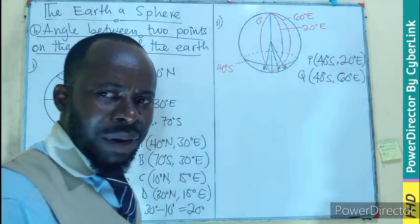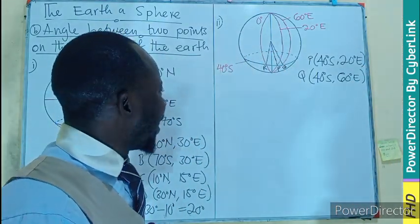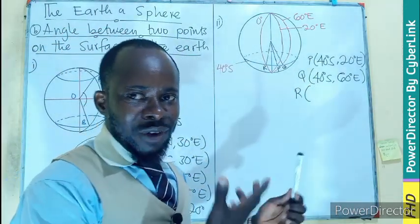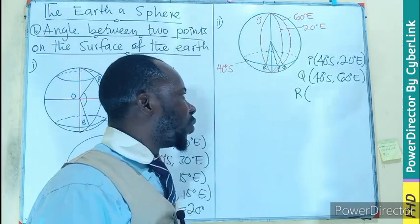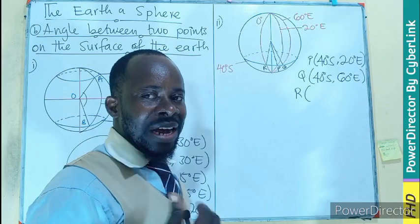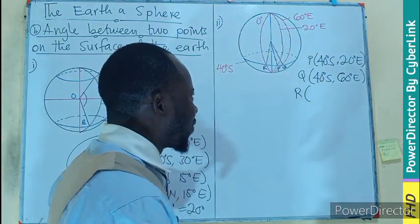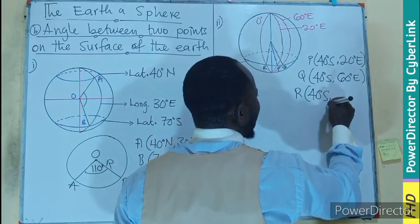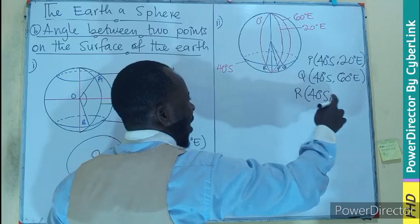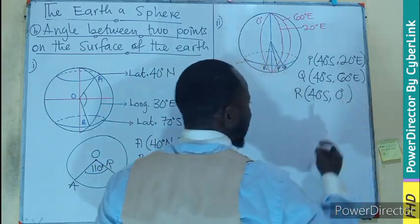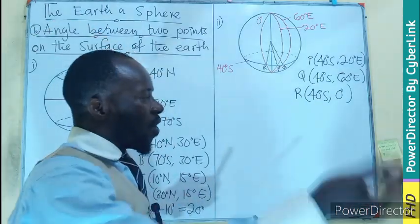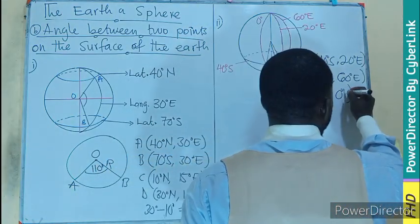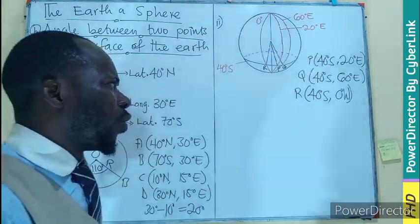Now let's identify point R — you can pause and try to work it out. Point R has latitude 40 degrees south, then on the longitude it is at zero degrees, which we can also express as zero degrees west or zero degrees east to indicate the prime meridian.